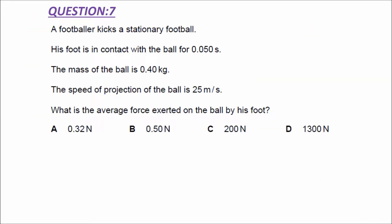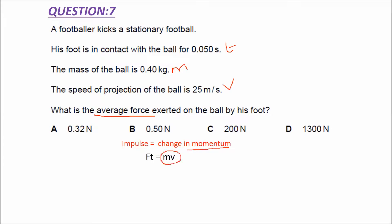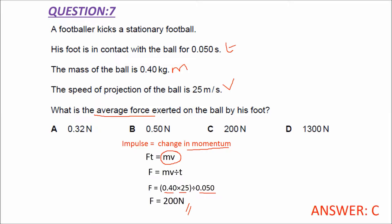Let us discuss the seventh question. A footballer kicks a stationary football. His foot is in contact with the ball for 0.050 seconds. The mass of the ball is 0.40 kilogram and the speed of projection is 25 meter per second. Find the force exerted on the ball. Since the ball starts from rest, there is only one momentum, MV. Rearranging, F equals MV divided by T. Substituting mass times velocity divided by time, we get 200 Newton. The answer is C.